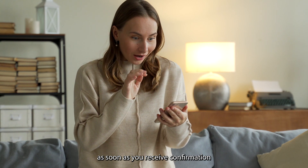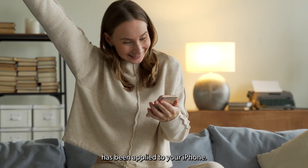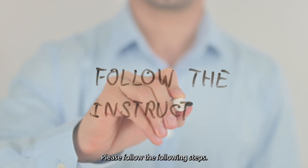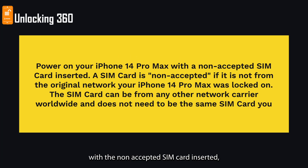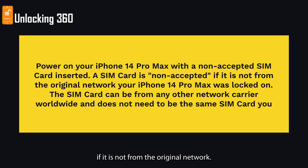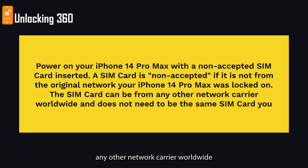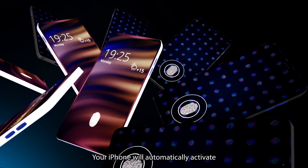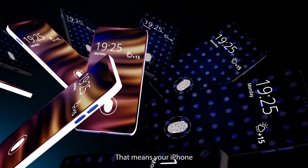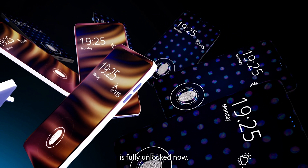As soon as you receive confirmation that the unlock has been applied to your iPhone, follow these steps. Step 1: Power on your iPhone with a non-accepted SIM card inserted. A SIM card is non-accepted if it is not from the original network your iPhone was locked on. The SIM card can be from any other network carrier worldwide and does not need to be the one you want to use in the future. Step 2: Your iPhone will automatically activate with your new SIM card, meaning your iPhone is fully unlocked.